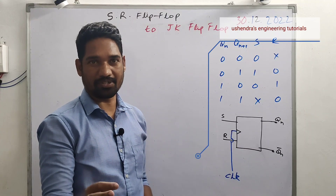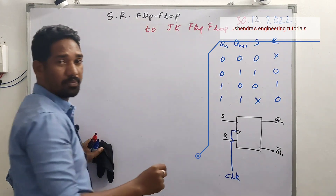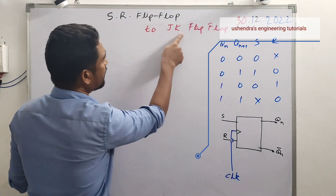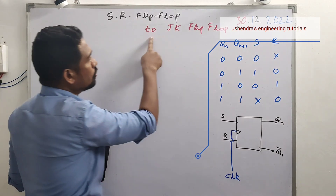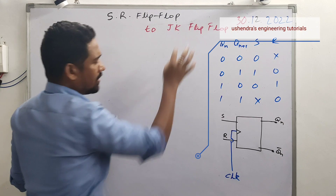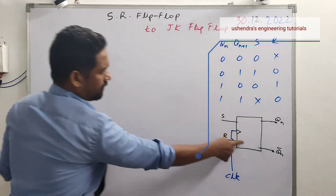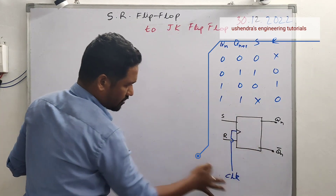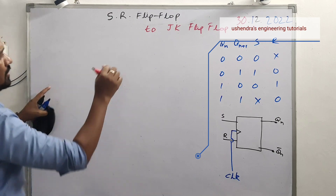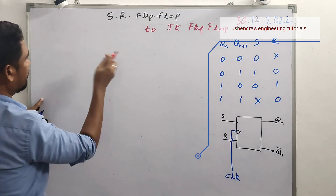Important topic: flip-flop conversion. Today we are converting an SR flip-flop to a JK flip-flop. Given the source flip-flop, we need to convert to the destination JK flip-flop. We will prepare the tabular form and make the modification so that the SR flip-flop works like a JK flip-flop. The destination flip-flop's extended truth table is needed.